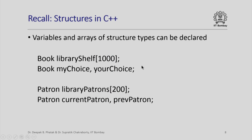We also saw in the last lecture that in C++ it is possible to define variables and arrays of structure types, just like we can declare variables and arrays of primitive data types like integer, double, float, character, and so on. For example, 'library_shelf' is an array of size 1000 where each element is of structure type book; 'my_choice' and 'your_choice' are two variables of structure type book; 'library_patrons' is an array of size 200 of structure type patron; and 'current_patron' and 'previous_patron' are two variables of structure type patron.